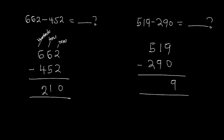I borrow 1 from the hundreds column, leaving 4 there. That borrowed 1 becomes 10 added to the 1 in the tens column, making 11. So 11 minus 9 gives 2. In the hundreds column, I'm now left with 4 minus 2, which gives 2. The answer for 519 minus 290 is 229.